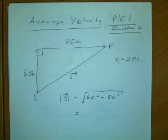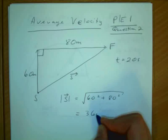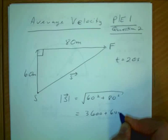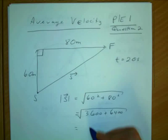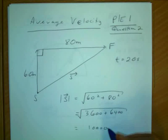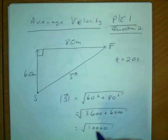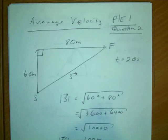60 squared plus 80 squared is 3600 plus 6400. What is that equal? 10,000. What's the square root of 10,000? 100. So it's 100 meters is the magnitude of displacement, so the magnitude of the velocity...